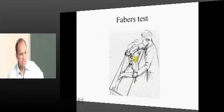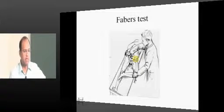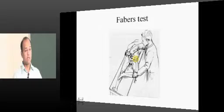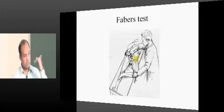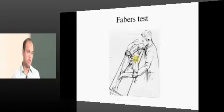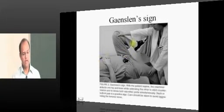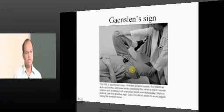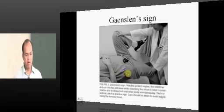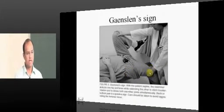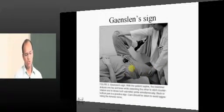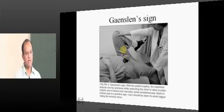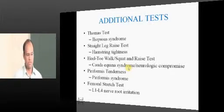If a patient complains of backache and you need to differentiate whether it is coming from a disc at one level or from the sacroiliac joint, you do the FABER test. Next is Gaenslen's test — a similar test to strain the sacroiliac joint by having the patient extend the hip joint off the edge of the bed. You strain both sacroiliac joints, and whichever is inflamed will produce pain on that side.